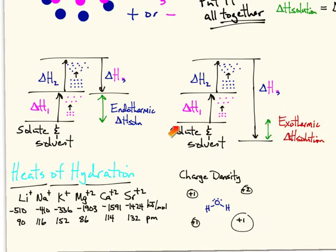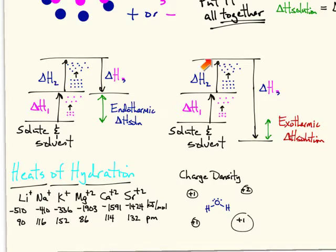Conversely, if I start with my separated solute and solvent, expand the solute — energy goes up — expand the solvent — energy goes up — and then allow mixing, if that ion-solvent interaction is a nice, strong interaction, I may come down further than I had initially gone up. This is how we get an exothermic heat of solution. So these are the two possible outcomes shown in enthalpy diagrams.